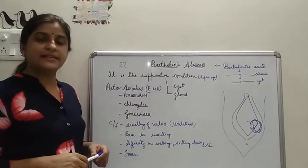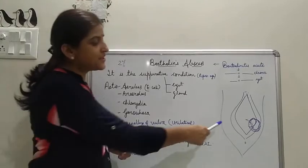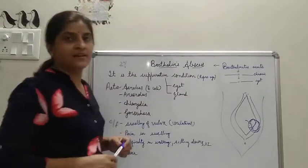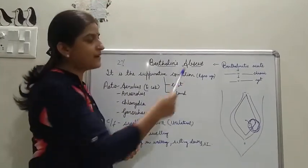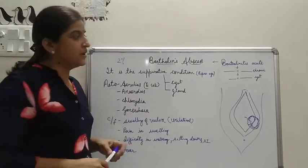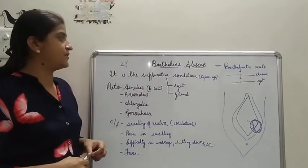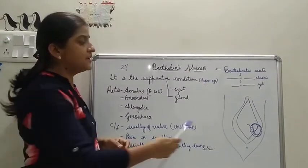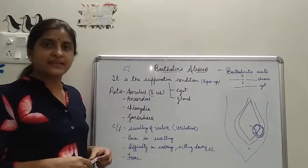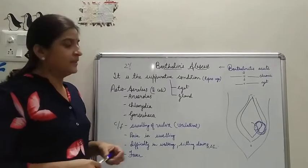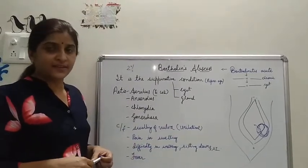Now, the anatomy and physiology: the Bartholin gland secretes certain secretions which lubricate the vagina and keep the vagina moist. It is also helpful during sexual intercourse.